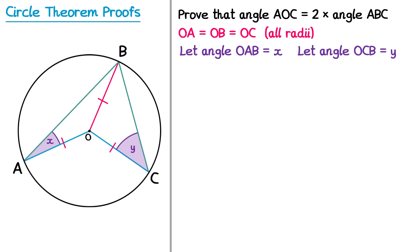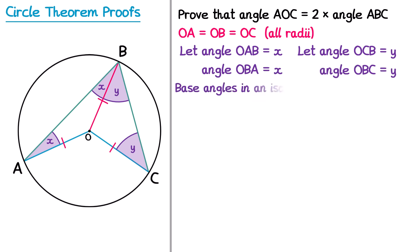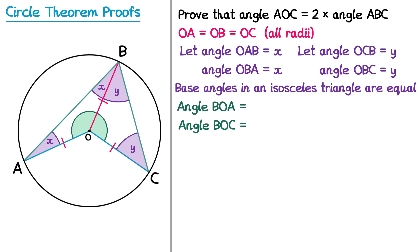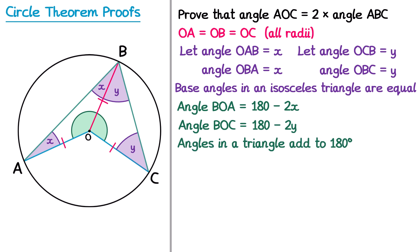With these two angles marked, we can find many other angles in terms of X and Y. This angle up here is also X because it's inside an isosceles triangle, and similarly this angle is also Y. So angle OBA equals X and angle OBC equals Y; the reason is the base angles in an isosceles triangle are equal. Next we find the two green angles, BOA and BOC, by looking at each triangle separately. Triangle ABO is isosceles with two angles of X, so angle BOA is 180 minus 2X. Similarly, angle BOC is 180 minus 2Y. The reason is angles in a triangle add to 180 degrees.